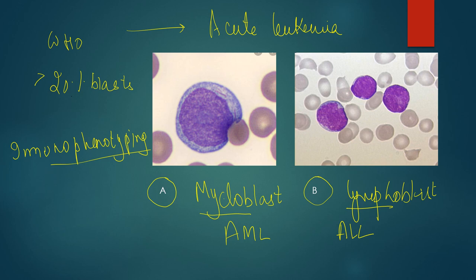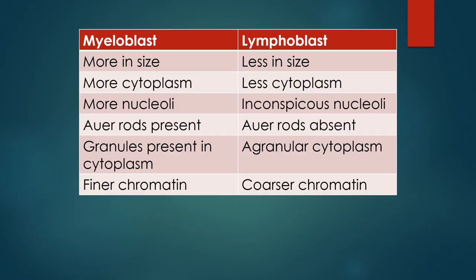I have made a very simple mnemonic for you. M for myeloblast, M for more — more in size, so a larger size cell. More amount of cytoplasm. More number of nucleoli: 3 to 5 nucleoli usually in a myeloblast, whereas a lymphoblast has only 1 to 2 or very inconspicuous nucleoli.